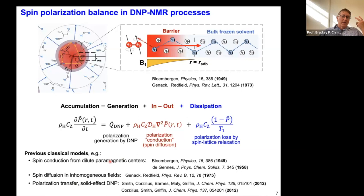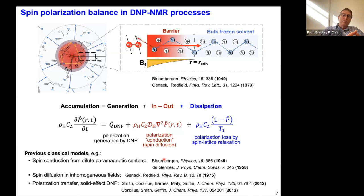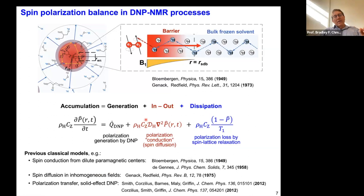Compared to what the earlier work had done, I'll make a couple of distinguishing points. Most of the early work had a paramagnetic impurity as a sink of polarization — the bulk was being polarized from the bulk going toward the paramagnetic center and being consumed, causing rapid relaxation in the bulk. We're doing it the opposite direction. We're exciting the electron spin with microwaves and polarization is going the other way. So we have a polarization generation term that those earlier models don't have.